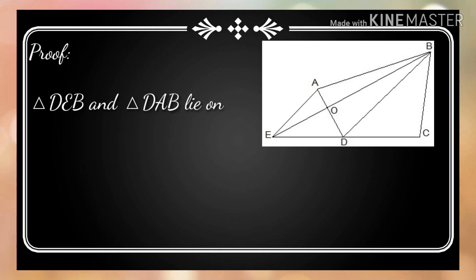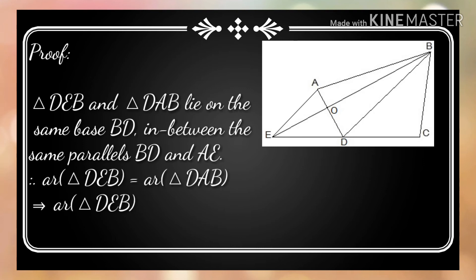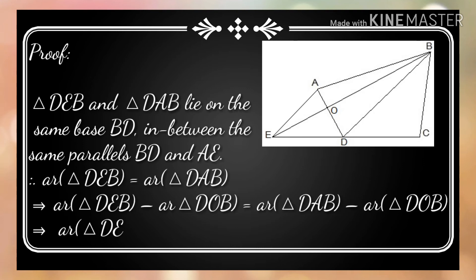Proof. Triangles DAB and EAB lie on the same base BD, in between the same parallels BD and AE. Therefore, area of triangle DAB equals area of triangle EAB. This implies: area of triangle DAB minus area of triangle DOB equals area of triangle EAB minus area of triangle DOB. Therefore, area of triangle DAO equals area of triangle AOB.